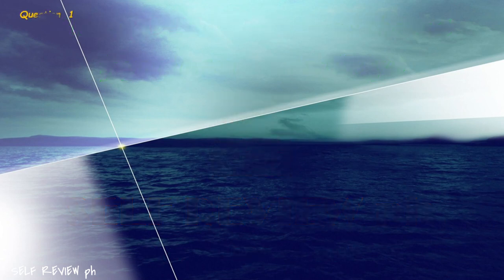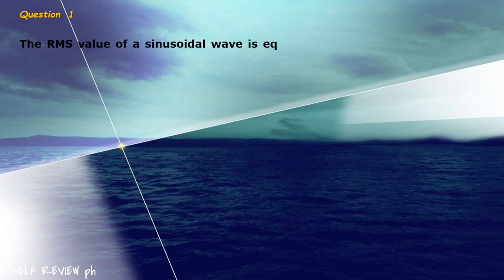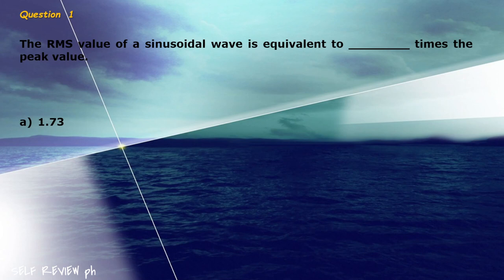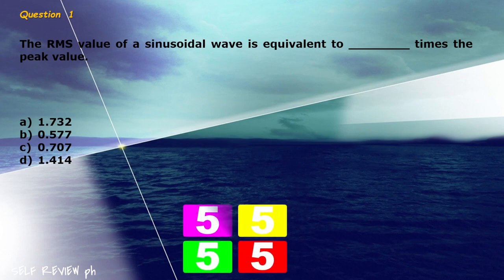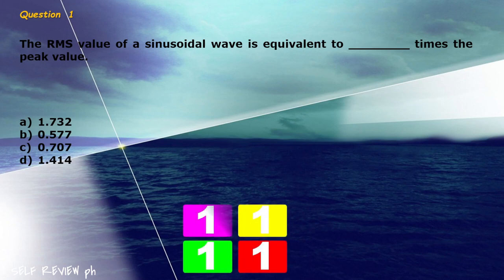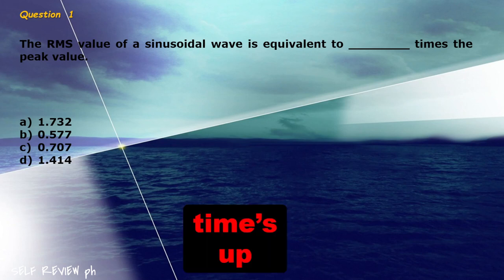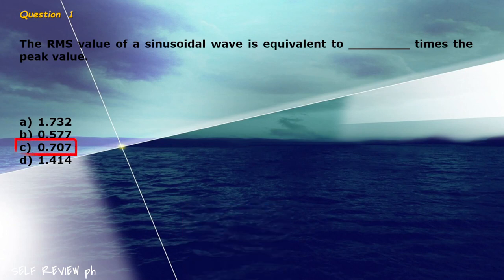Question 1: The RMS value of a sinusoidal wave is equivalent to blank times the peak value. A) 1.732, B) 0.577, C) 0.707, D) 1.414. The correct answer is letter C, 0.707.